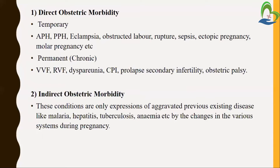Conditions we can't manage are related to the permanent cause. In indirect obstetric morbidity, along with the direct cause, some additional or idiopathic — unknown — causes are also responsible. These conditions involve aggravation of pre-existing diseases like malaria, hepatitis, tuberculosis, and anemia due to changes in various systems during pregnancy. If the mother has various kinds of changes during pregnancy, these infectious diseases may occur, and they are included in the indirect obstetric morbidity cause.